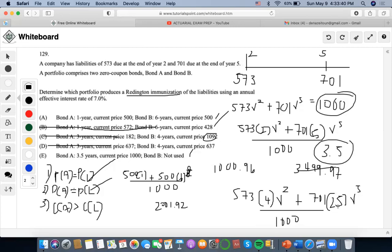And then this one is 701 times 25 times 1.07 to the negative 5, and then plus 2001.92, which is 14,497 divided by 1000. So it's going to be 14.49 as the convexity for the liabilities.